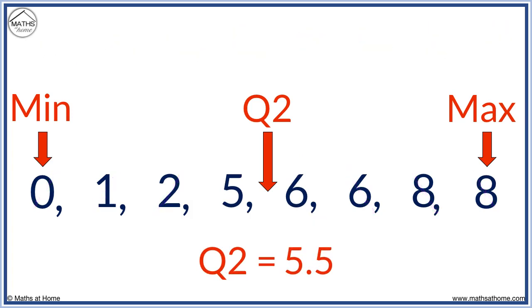Now to find Q1, we find the median of all numbers left of Q2. Crossing off, we are left with one and two. So Q1 is directly in between them. Q1 equals 1.5.